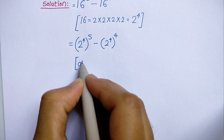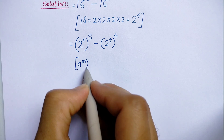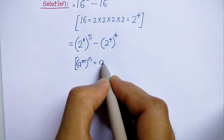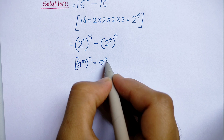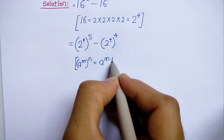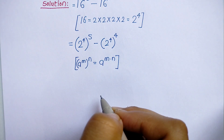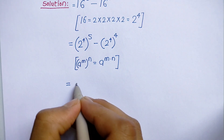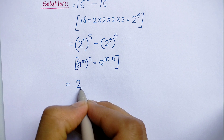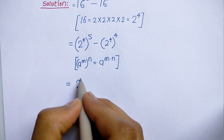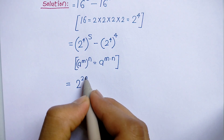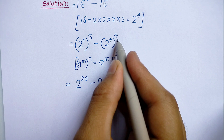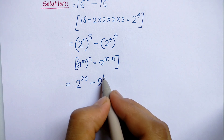a to the power m, to the power n, is equal to a to the power m into n. Applying this rule, we get 2 to the power 4 into 5, which is 20, minus 2 to the power 4 into 4, which is 16. So we have 2 to the power 20 minus 2 to the power 16.